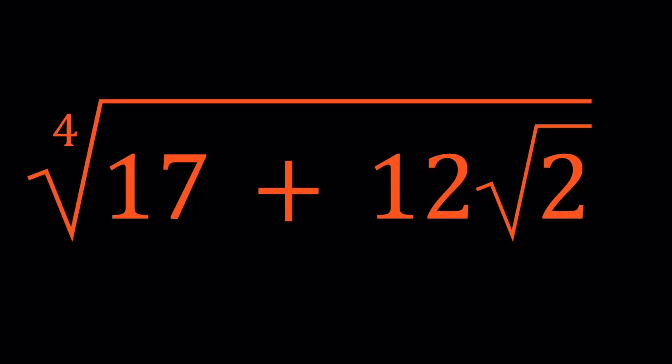Hello everyone. In this video, we're going to be simplifying a radical expression. We have the fourth root of 17 plus 12 root 2, and we're going to simplify this expression as much as possible. I'll be presenting two methods, and let's start with the first one.